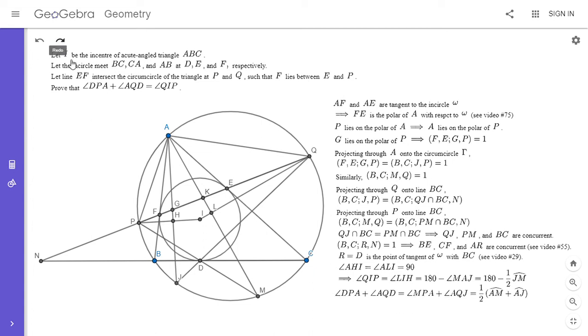All right. So angle DPA plus angle AQD. Well, angle DPA, that's the same as angle MPA, now that we know that that concurrency point is point D. And similarly angle AQD is the same as angle AQJ. And each of those are half of their intercepted arcs. So angle MPA is half of arc AM. And angle AQJ is half of arc AJ. So this is half of arcs AM plus AJ. But if we try to compare these two, arc AM plus arc AJ is 360 minus arc JM, since those three arcs comprise the entire circle. So half of the sum of AM and AJ is actually half of 360 minus JM. And that is 180 minus half of JM, which is the same as angle QIP. And so that solves the problem.